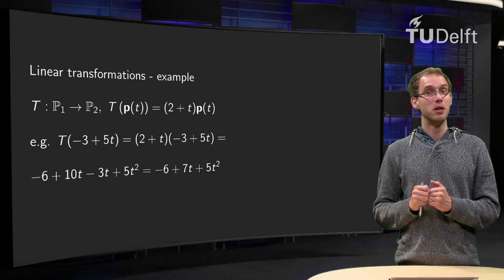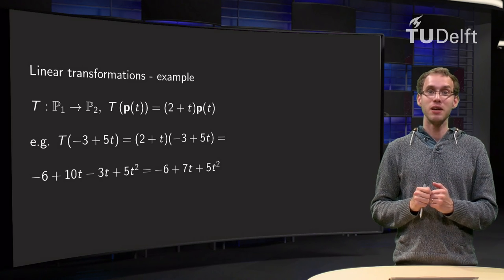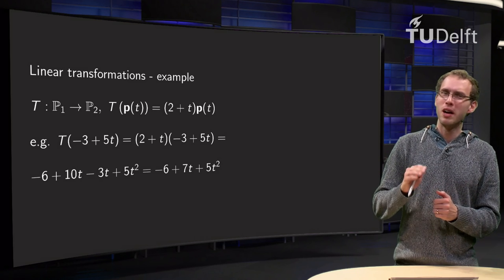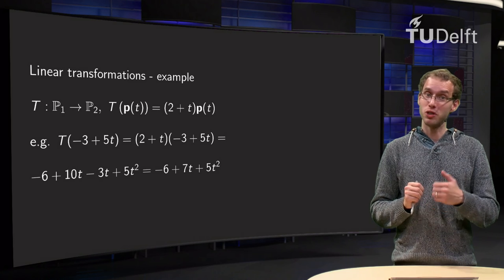In order to establish whether a transformation is linear, we have only one option: use the definition and see whether the properties are satisfied. That sounds awful. In practice it is not so bad as we will see in this video.